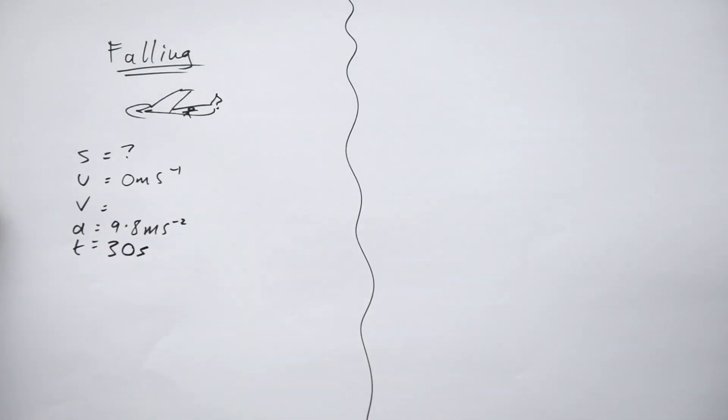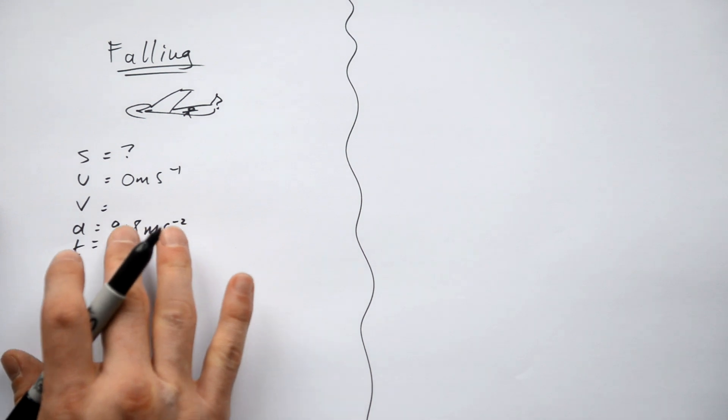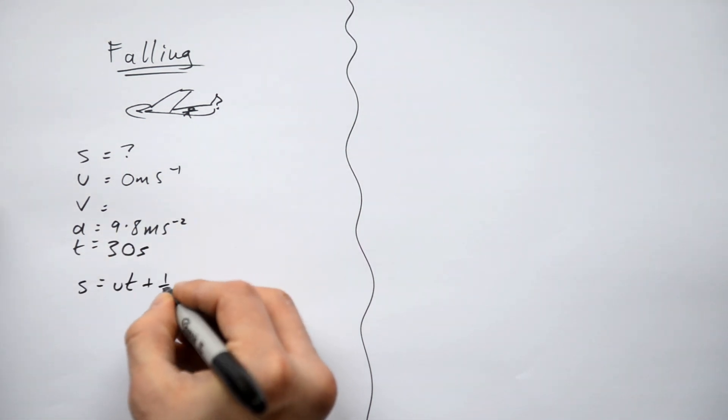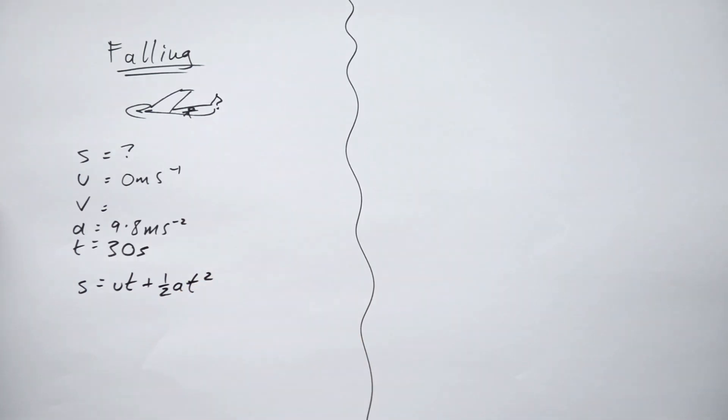I'm going to say that it takes him 30 seconds to fall a certain distance. What about if I wanted to find out what that distance actually was? Well, I want the equation that doesn't have v in, and that turns out to be s equals ut plus half a t squared. Do I have to rearrange this? No, because I am actually trying to find out displacement here. But I know that ut will disappear because u is 0, so the whole thing disappears. So just s equals half at squared, so that gives me s equals half times 9.8 times 30 squared. So he falls a distance of 4,410 meters.